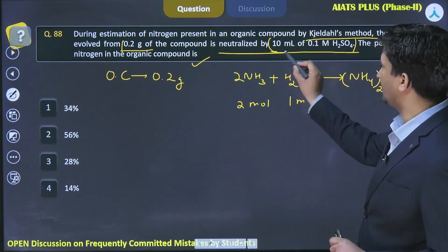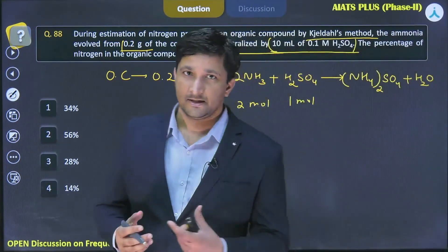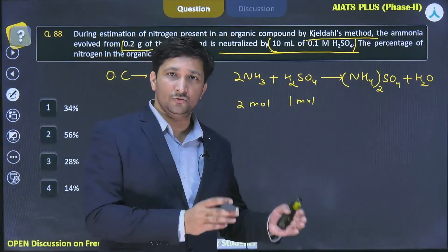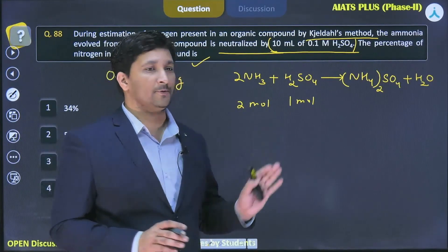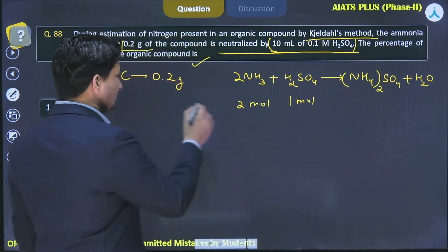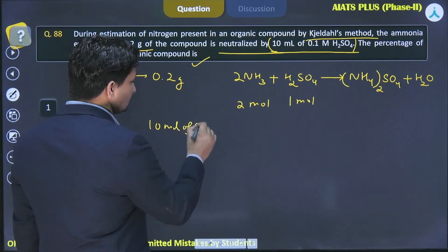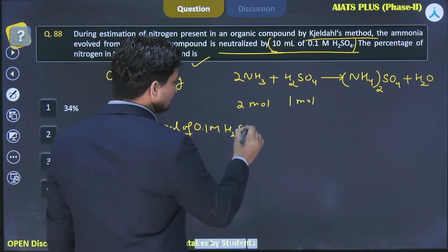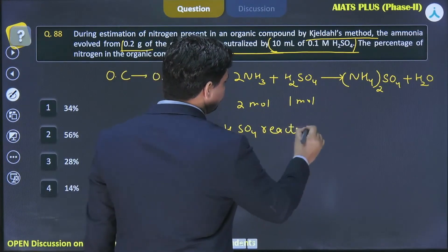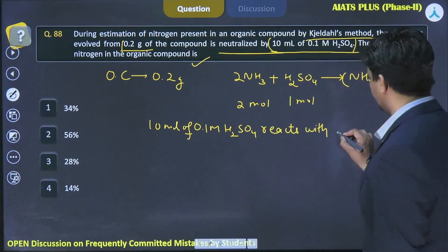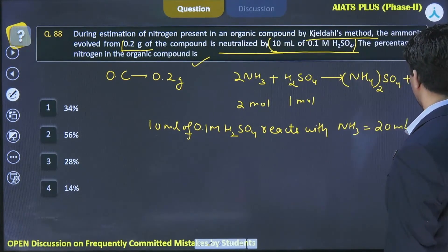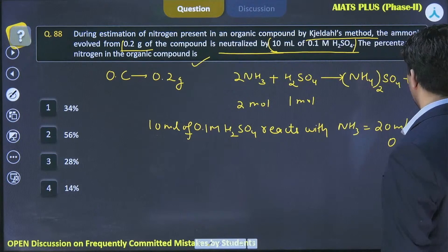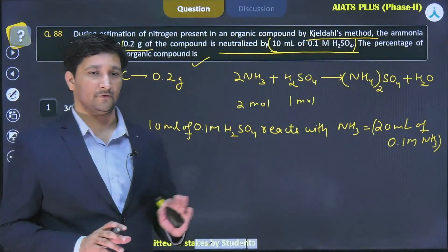If we have been given 10 mL of 0.1 molar H₂SO₄, it simply means that it can react with 10 mL of 0.2 molar ammonia — meaning double the moles of ammonia should be there. Or you can take it as 20 mL of 0.1 molar ammonia. So, 10 mL of 0.1 molar H₂SO₄ reacts with ammonia that is equal to 20 mL of 0.1 molar ammonia.